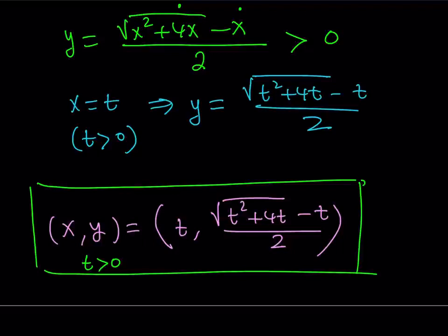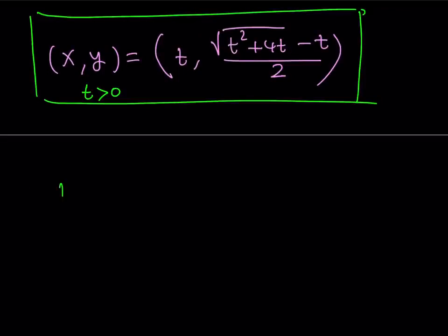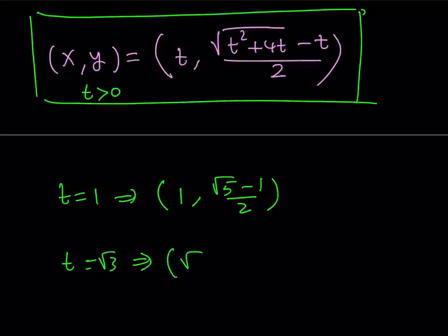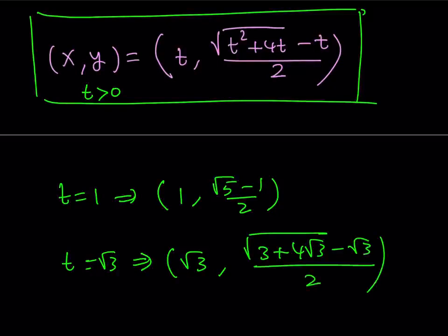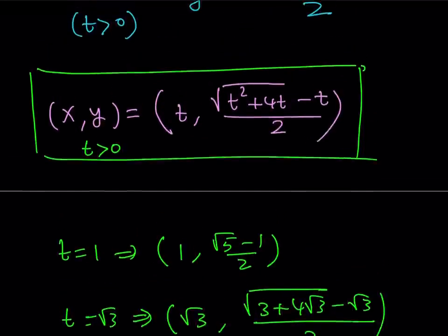Now, what is this supposed to mean? Let's talk a little bit about this expression here. For example, if t is equal to 1, then you're going to plug in t equals 1 everywhere, and this is going to give you 1 comma square root of 5 minus 1 over 2. And as you know, this is somewhat a special value. Hopefully, you've seen that before. Now, you may also do this backwards: which value is going to give you square root of 5 plus 1 over 2 for the y? And you just need to solve for t. Or if t is equal to something like square root of 3, then from here, we're going to get square root of 3 comma square root of 3 plus 4 square root of 3 minus square root of 3 divided by 2. You can make it as crazy as you want. But obviously, for infinitely many positive values of t, we get infinitely many ordered pairs that are solutions to this equation.